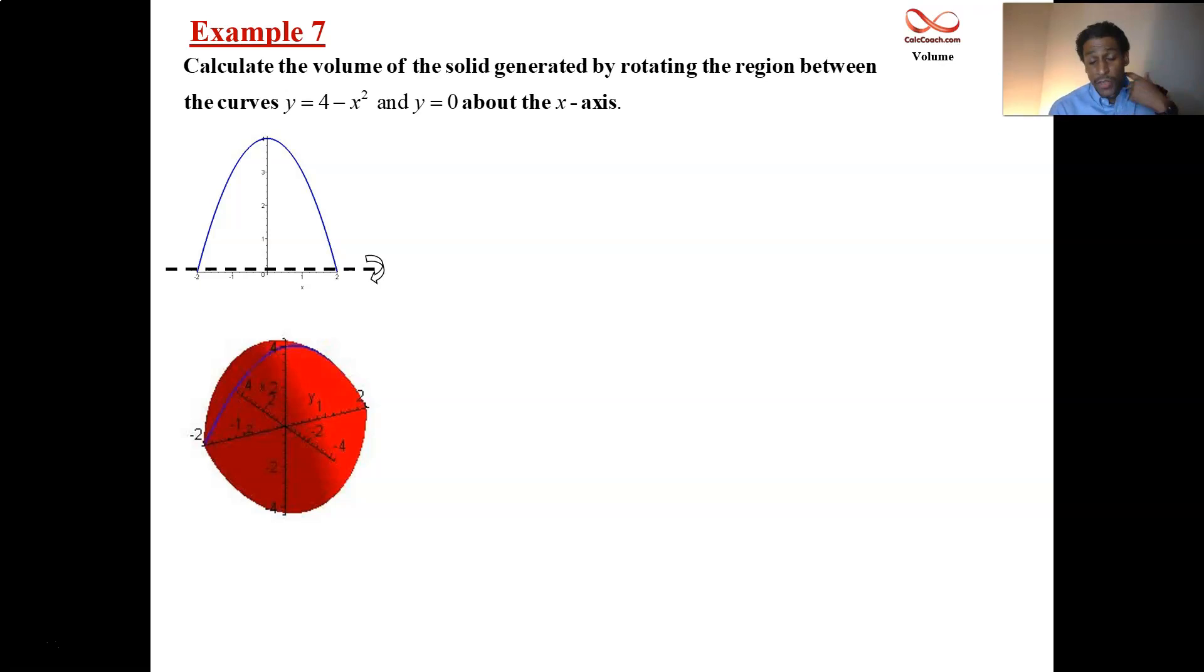Well first you have to make sure you can draw the region and 4 minus x squared is a parabola that opens downward, which has a maximum at 4, the vertex is at 4 on the y-axis.